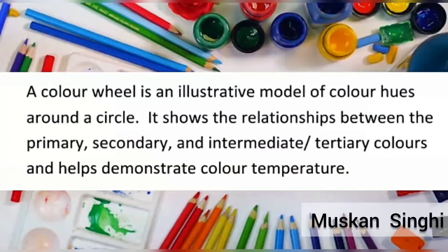A color wheel is an illustrative model of color arranged around a circle. It shows the relationship between the primary, secondary, and intermediate or tertiary colors, and helps demonstrate color temperature.